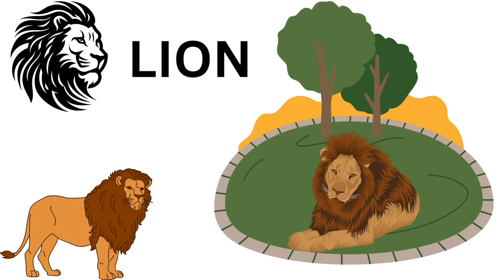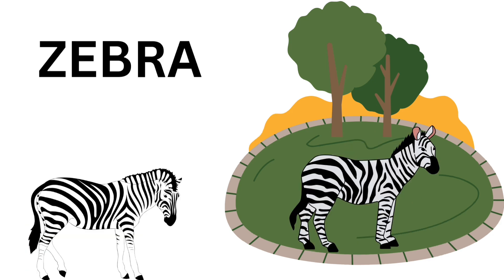Fifth animal is lion. L I O N — Lion, King of the jungle. Sixth animal is zebra. Z E B R A — zebra.